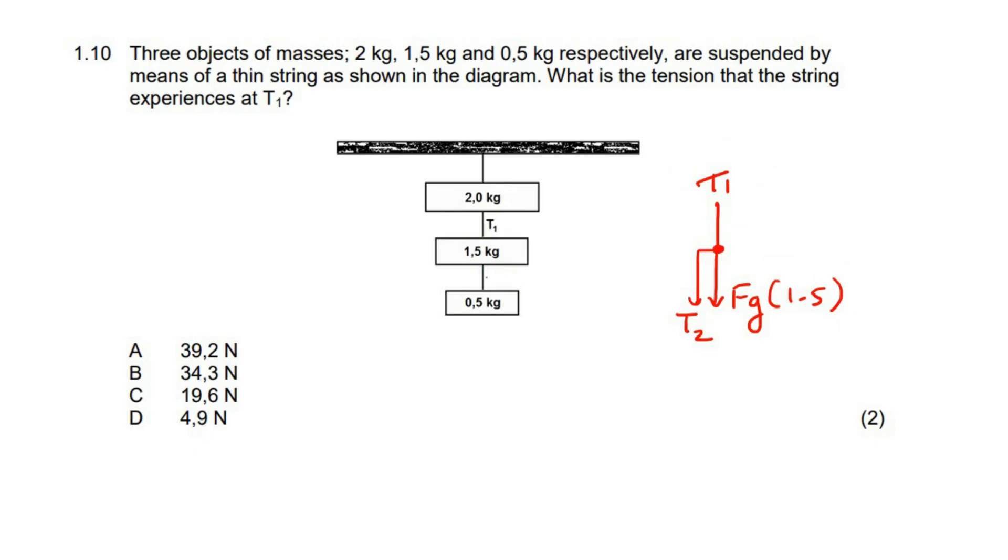So if we then do a free body diagram on this object, we know that it has to carry its own mass, which is gravity, but that's only for the 0.5, and then it's got this rope T2. That is the only forces that are physically touching this one.